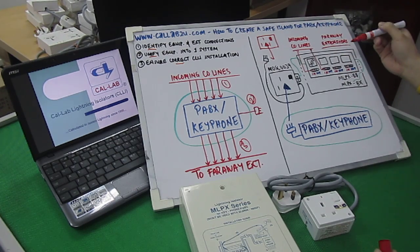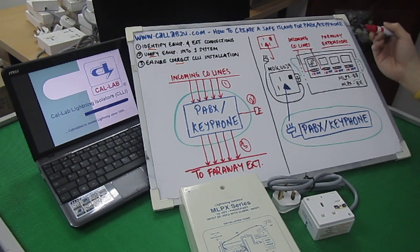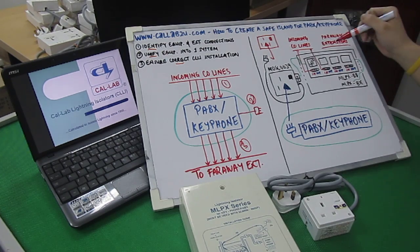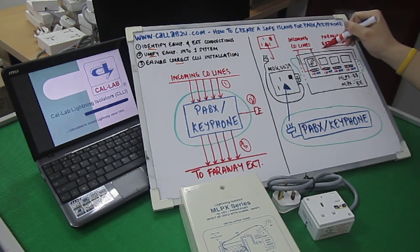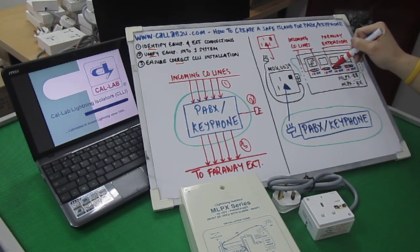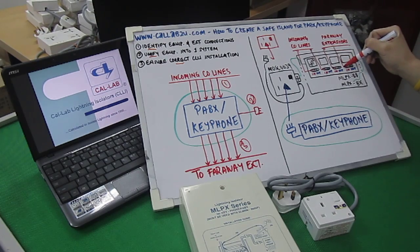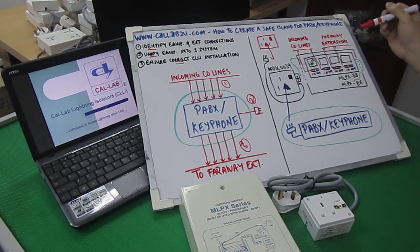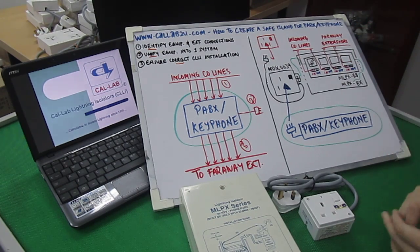There'll obviously be a couple lines going through. So, for extensions, the extensions coming into your key phone system before it goes to your key phone or PABX again goes to the in terminal, like such. I'll show you the physical form later, so no worries.